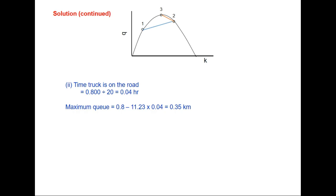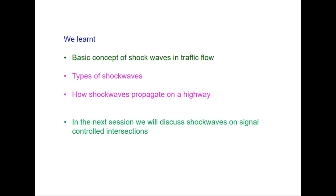The time the truck is on the road is 0.8 km / 20 km/h = 0.04 hours. The maximum platoon length = (speed of shockwave 1-2 - speed of shockwave 2-3... effectively) the platoon will reach a maximum of 0.8 - 11.23 × 0.04 = 0.35 km, that is 350 metres. So the maximum platoon will extend up to 350 metres.